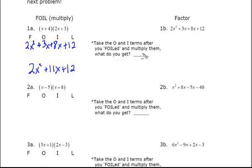This middle question is super important. So take the O and I terms, the O term being 3x and the I term being 8x. Multiply them together and we get, in this case, 24x squared.